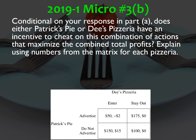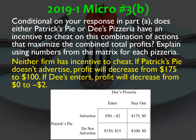Part B: does either firm have an incentive to cheat on the combination that maximizes combined profits? If Patrick's cheats and stops advertising, their profits go down from $175 to $100 — so they won't cheat. If D's cheats and enters the market instead of staying out, their profits go from $0 to negative $2 — they are worse off. Neither firm has an incentive to cheat because both would be worse off by deviating from the agreement.